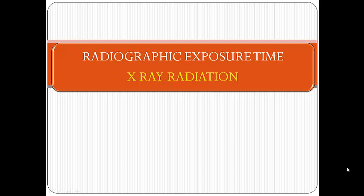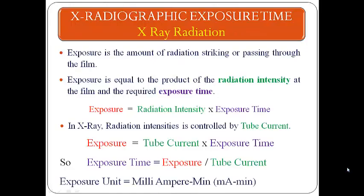Our topic is how to calculate the expiry time for X-ray radiation. To calculate the expiry time we must know about the expiry. Expiry is the amount of radiation striking or passing through the film. Expiry is equal to the product of the radiation intensity at the film and the required expiry time, so the equation will be: expiry = radiation intensity × expiry time.